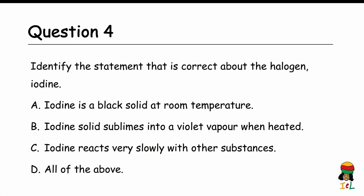Question 4: Identify the statement that is correct about the halogen iodine. A. Iodine is a black solid at room temperature. B. Iodine solid sublimes into a purple or violet vapor when heated. C. Iodine reacts very slowly with other substances. D. All of the above. The answer is D — all of the above statements are correct about iodine.